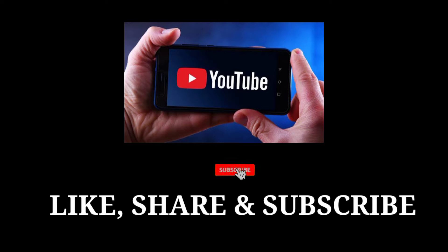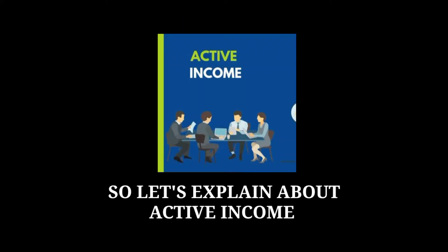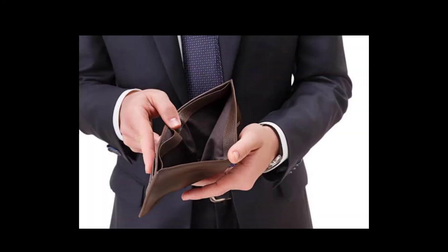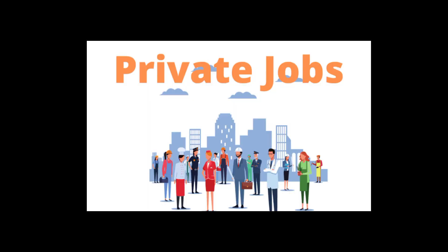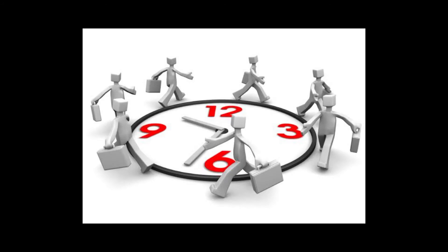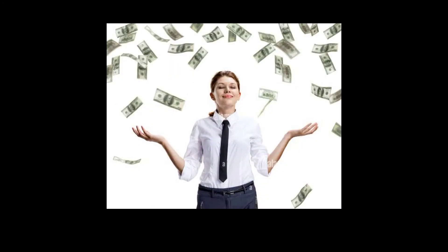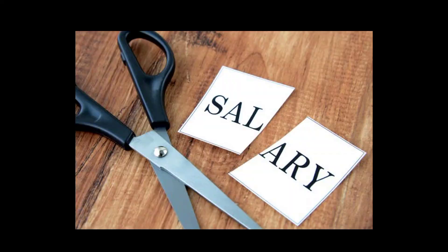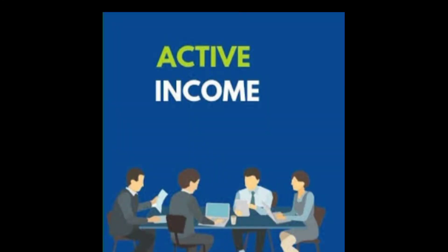Please subscribe to the channel and turn on the bell icon so you don't miss interesting videos. So friends, what is active income? Active income is the income you earn by working. For example, if you have a government job or a private job — a regular salary — you go to office and you get a fixed salary income. If you have a job, you have a salary card. You have an active income.